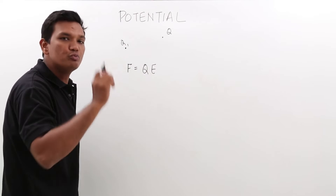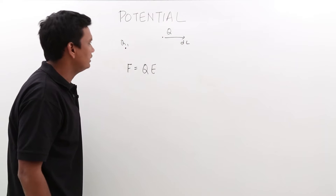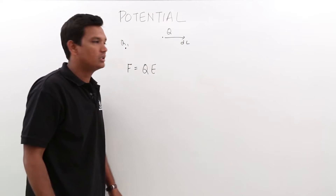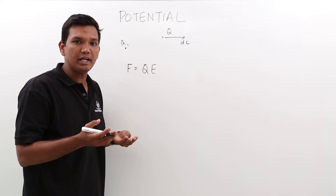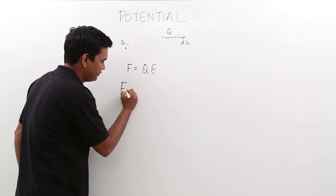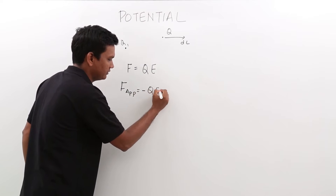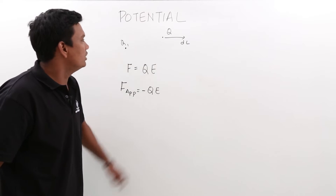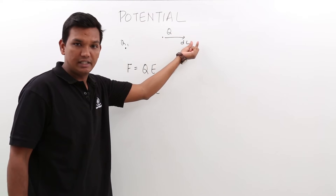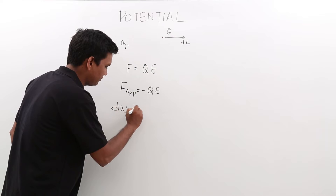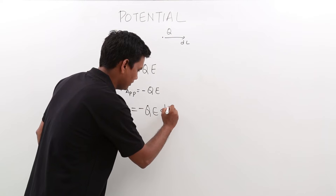If I want to move the charge for some distance, say dl, then I have to apply a force. The force already on this charge is qE, which means I have to apply a force opposite to that. So the applied force is equal to minus qE in order to move the charge. The work done to move the charge a distance dl would be given by minus qE·dl.